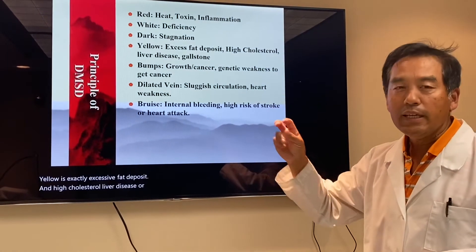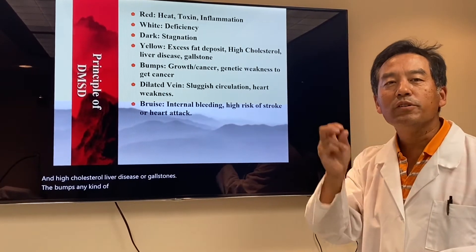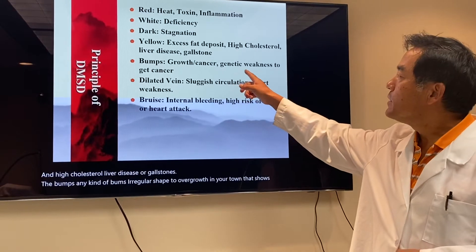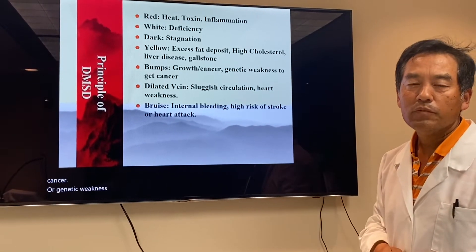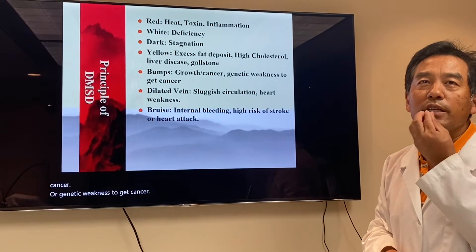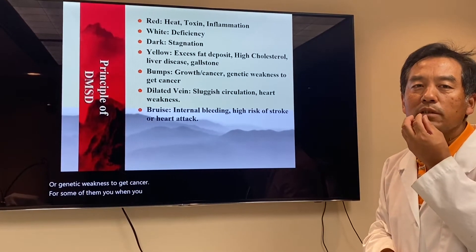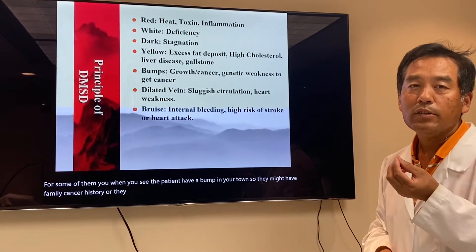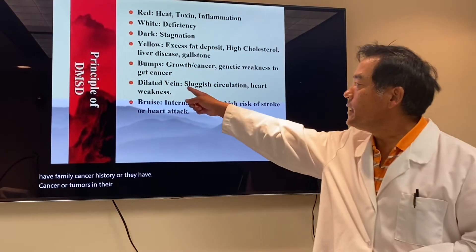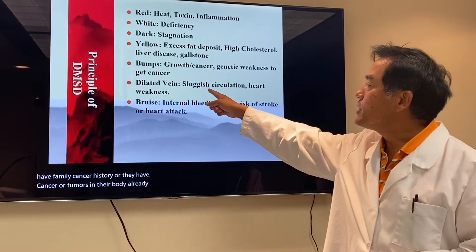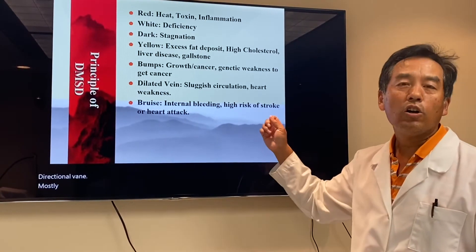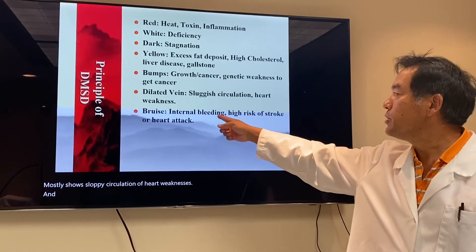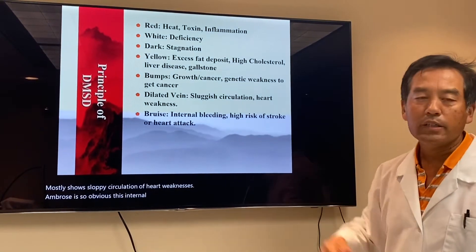Bumps — any kind of bumps, irregular shaped or overgrowth in your tongue — show growth or cancer, or a genetic weakness to get cancer. When you see a patient have bumps in their tongue, they may have a family cancer history, or they have cancer or tumors in their body already. Dilated veins mostly show sluggish circulation or heart weakness. Ambrosis — obviously — indicates internal bleeding and high risk of stroke or heart attack.